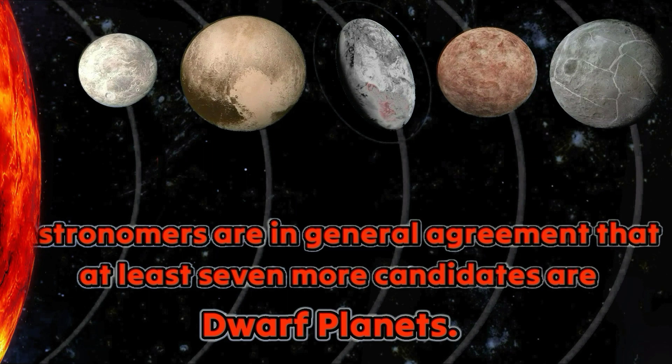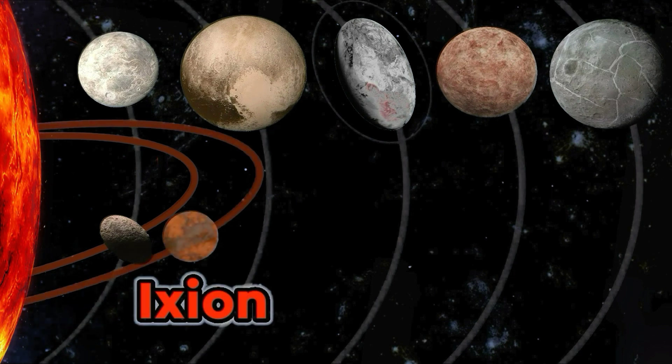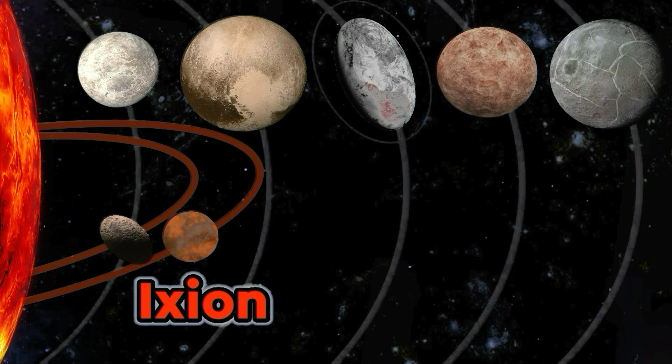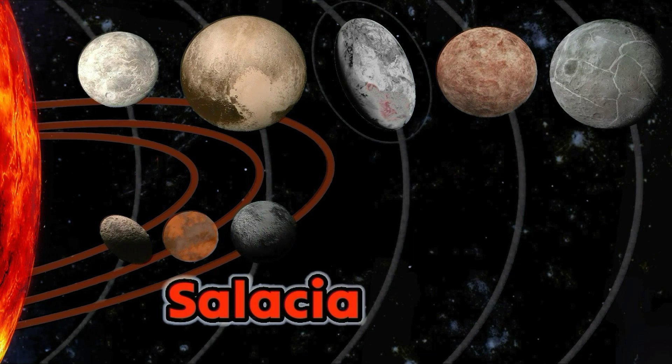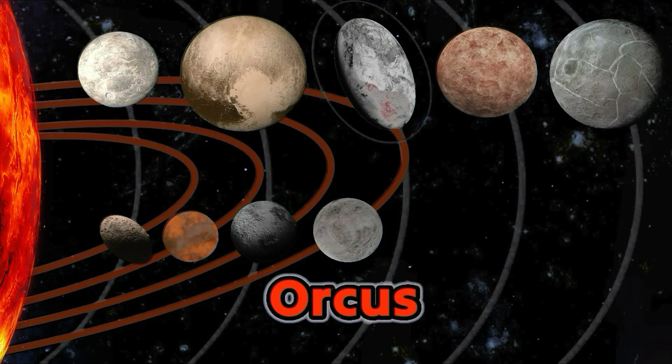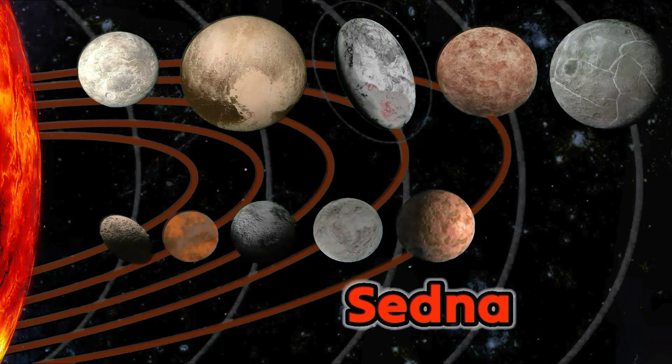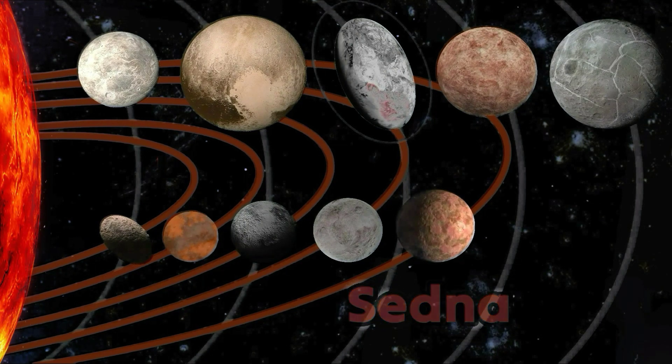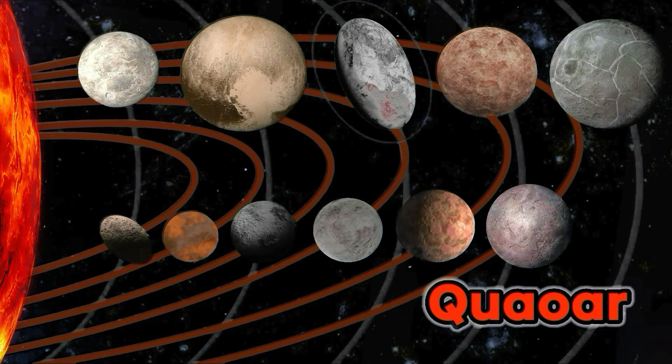Astronomers are in general agreement that at least seven more candidates are dwarf planets, so let's learn them together. Varuna. Ixion. Salacia. Orcus. Sedna. Quaoar.